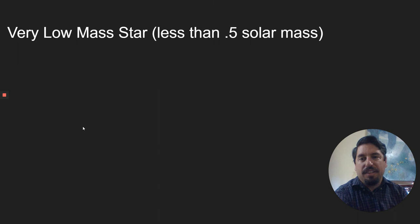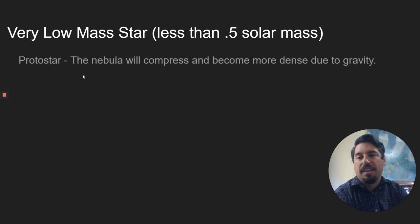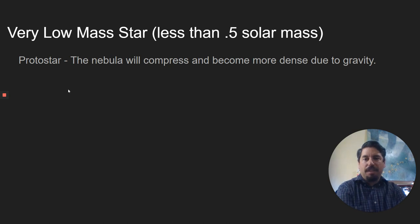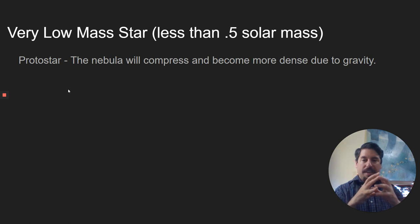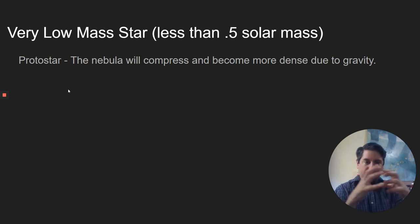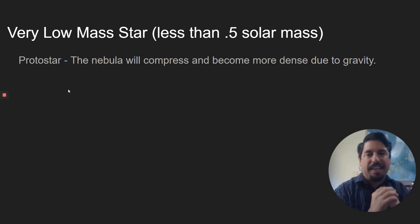A very low mass star is a stellar object that is half the mass of the sun — 0.5 solar mass. The way they form, they start off as a nebula. Nebulas are clouds of dust and gases. Gravity, if strong enough, pulls all that dust and mass together and compresses it into a protostar. A protostar is a loose compression of dust and gas — it's not quite a star yet, like a baby star.